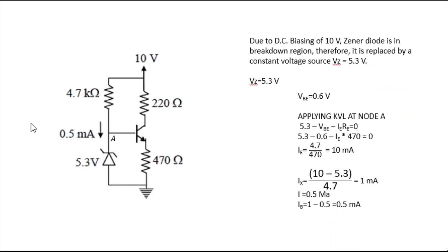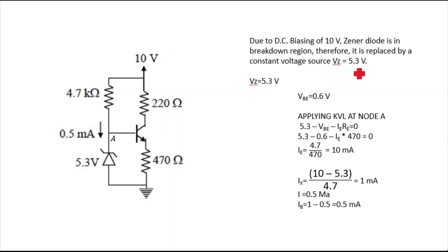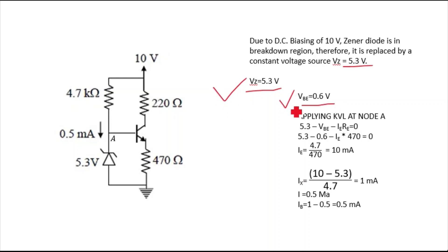In our circuit, the Zener diode is in the feedback path. Since VCC = 10 V, the Zener diode is in the breakdown region and is replaced by a constant voltage VZ = 5.3 V. VBE is given as 0.6 V, so we now know both VZ and VBE.